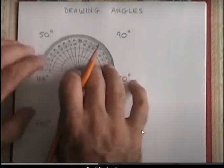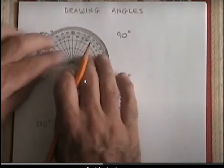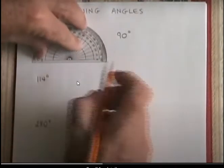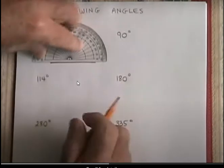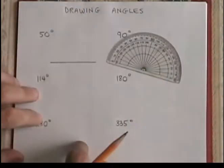Now at first we will place the protractor like this and draw a line. Clear?